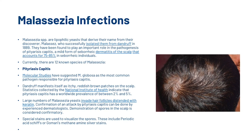Currently there are 12 known species of malassezia. Molecular studies have suggested that M. globosa is the most common pathogen responsible for Pityriasis capitis. Dandruff manifests as itchy reddish-brown patches on the scalp. Statistics from the National Institute of Health indicate that Pityriasis capitis has a worldwide prevalence of between 2–5%. Large numbers of malassezia yeasts invade hair follicles distended with keratin. Confirmation can be done by experienced dermatologists using special stains to visualise spores.